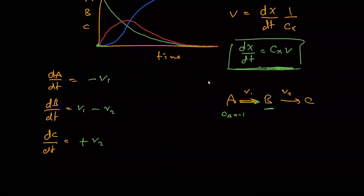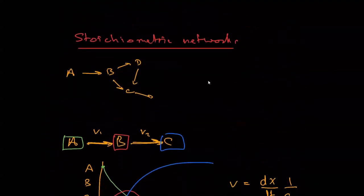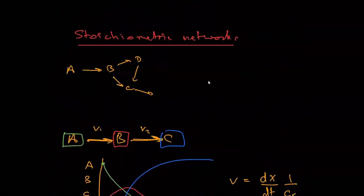In fact, for this one here, maybe we want to do this one. So let's write down the rates here, V1, V2, V3, V4. Let's put a D there, I guess, and then that's V5. Let's write down the rate of change of B.